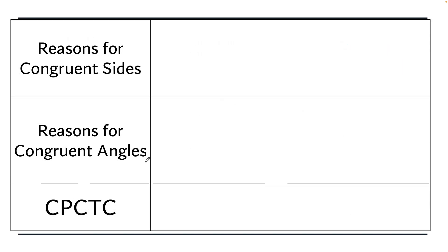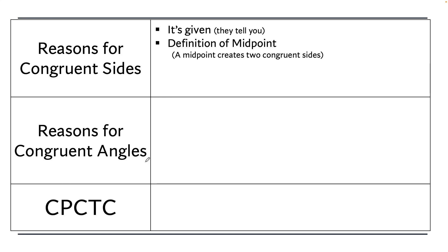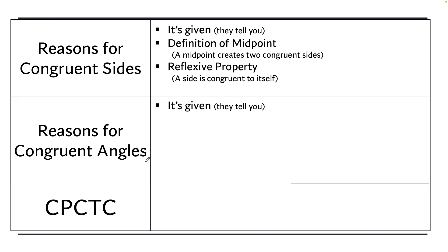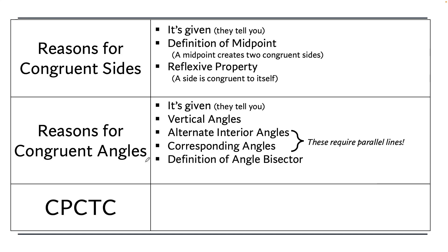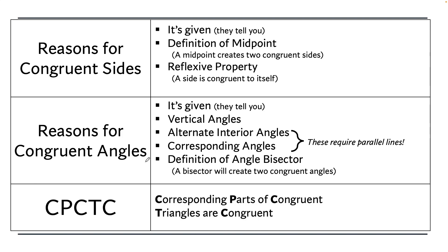The reasons we could use for congruent sides are: given, definition of midpoint, and reflexive property. Reasons for congruent angles include: given, vertical angles, alternate angles and corresponding angles — which require parallel lines — definition of angle bisector, and CPCTC, which stands for corresponding parts of congruent triangles are congruent. We'll cover that at the end of this lesson.